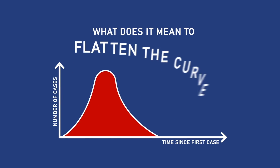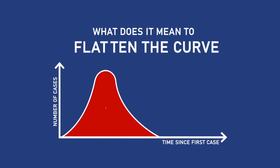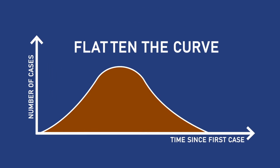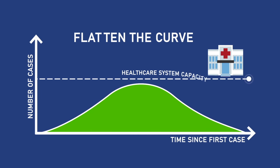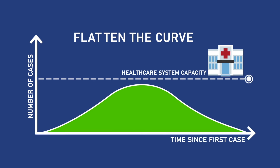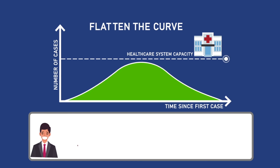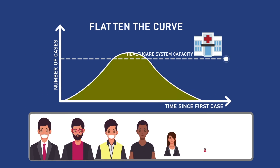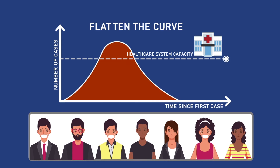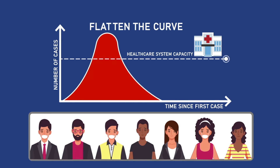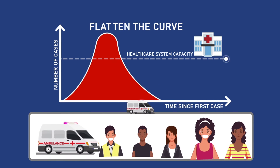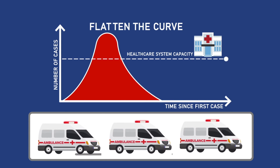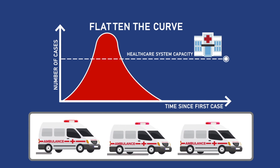What does it mean to flatten the curve and why is it important? Our health care system has a certain capacity for patients. When a lot of people become sick in a short period of time, it creates a spike in cases that can overwhelm local hospitals.